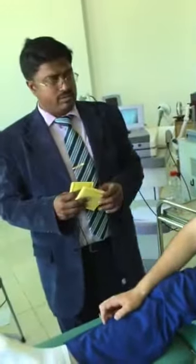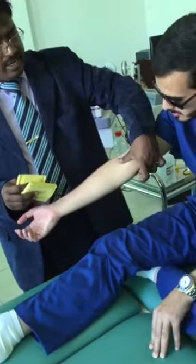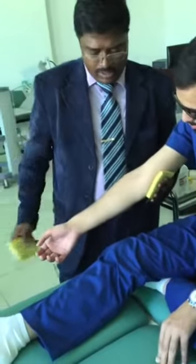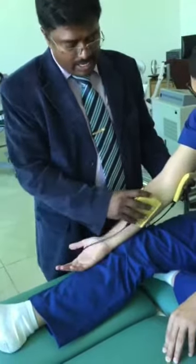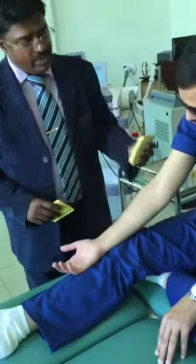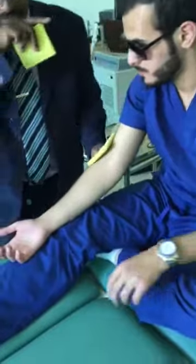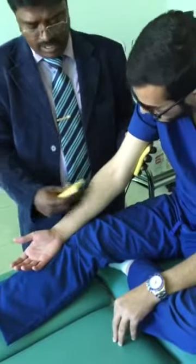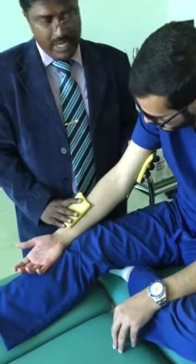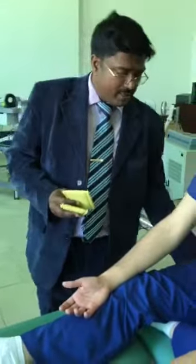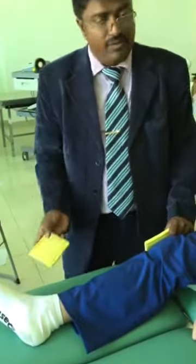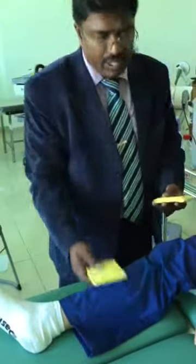For the ulnar nerve, the ulnar nerve is superficial at this point — the medial epicondyle area. You keep one electrode on the ulnar nerve and one on the ulnar aspect of the hand. For the median nerve, you keep one electrode on the medial aspect of the arm and one on the lateral aspect of the forearm. If the sciatic nerve is painful, keep one on the buttock and one on the posterior aspect of the leg. For the common peroneal nerve, keep it on the fibula head and the dorsal aspect of the foot. For the tibial nerve, keep it on the popliteal fossa and the posterior aspect of the calf.